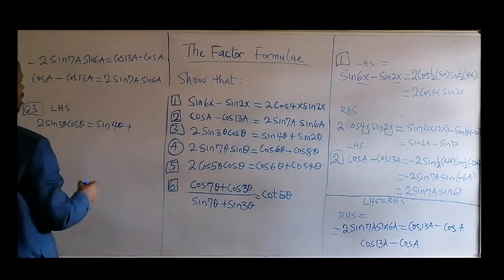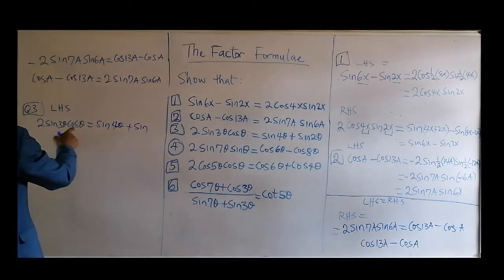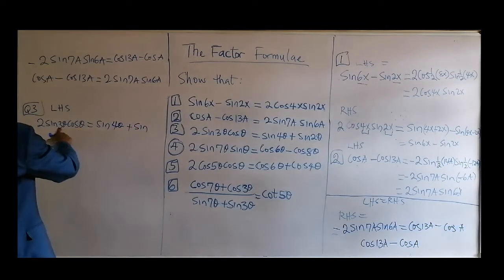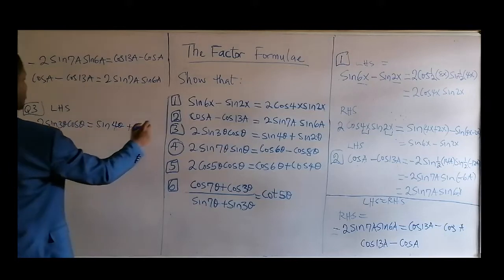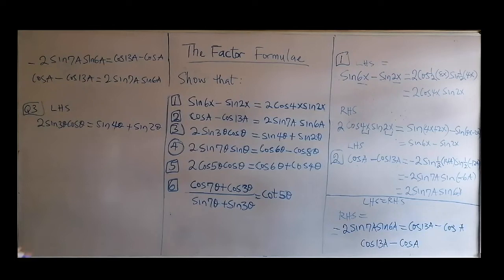Then plus sine of (θ minus 3θ) — that's minus 2θ... Actually that gives sine(4θ) plus sine(2θ). From left towards right — that one is done.